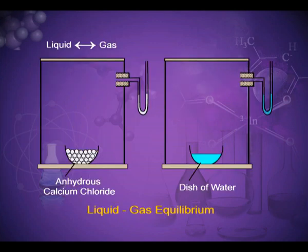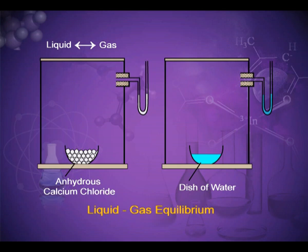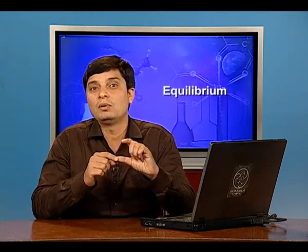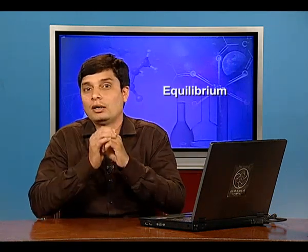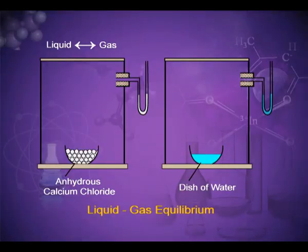This can be explained using a diagram. In the first box, a watch glass contains anhydrous CaCl₂ which absorbs moisture, so the mercury levels in both sides of the manometer are equal. In the second diagram, the CaCl₂ is replaced with water. The liquid water changes into vapors, increasing vapor pressure and pushing on the manometer, causing the mercury level on the right side to rise. After some time, condensation of water molecules occurs again, the mercury levels become equal on both sides, showing dynamic equilibrium.